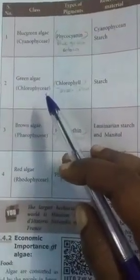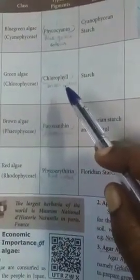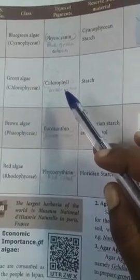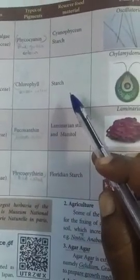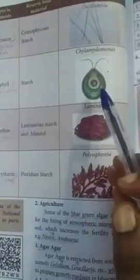The second group is green algae, Chlorophyceae. The pigment in Chlorophyceae is chlorophyll, which is green in color. The reserved food material is starch. An example of green algae is Chlamydomonas.